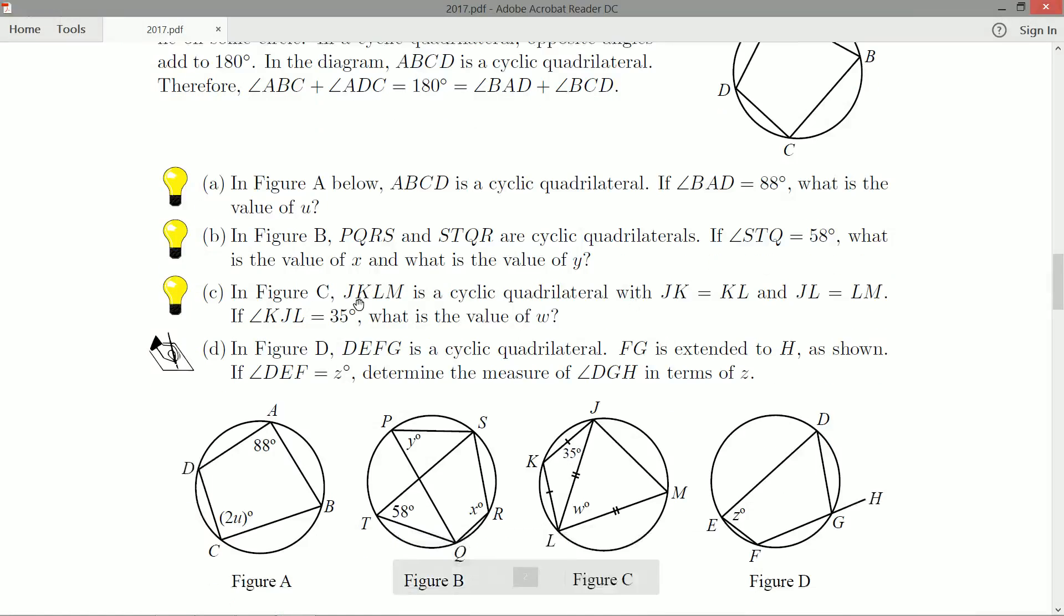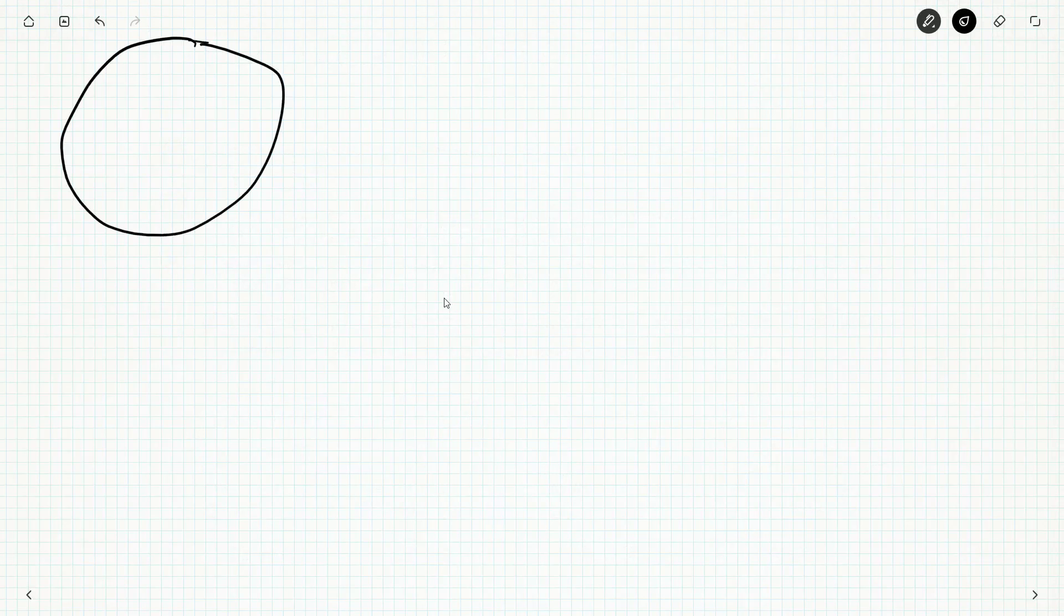On to our final light bulb question, part C. In figure C, JKLM is a cyclic quadrilateral with JK equal to KL and JL equal to LM. So we got a bunch of isosceles triangles in here. If angle KJL is 35 degrees, what is the value of w? Again we just need the final answer, it's a light bulb question. Don't stress yourself out writing too much because if you're confident, and it's question one, if you're writing the Hypatia with any confidence you know how to do question one well, so you won't really be relying on part marks.